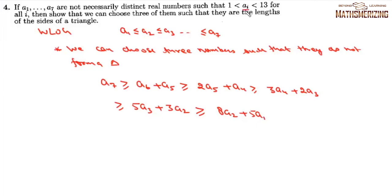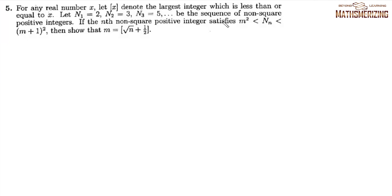Since each aᵢ lies between 1 and 13, a₂ > 1 and a₁ > 1, so a₇ > 8 + 5 = 13. But it is given that aᵢ ≤ 13, giving a contradiction. Therefore we can always find three numbers among the seven that are the lengths of the sides of a triangle.